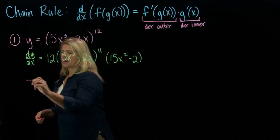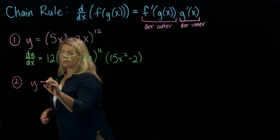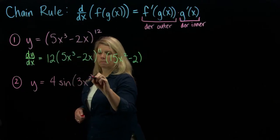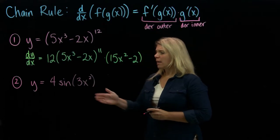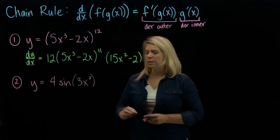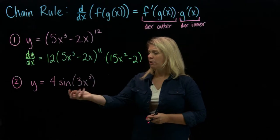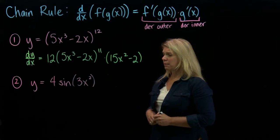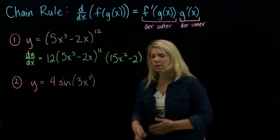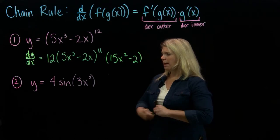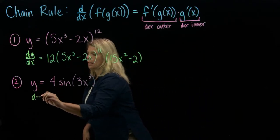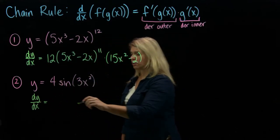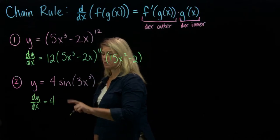We're going to look at another example that involves a trig function. Here we have a polynomial function, 3x squared, inside a trig function. We also have a constant out front, and we have a rule for differentiating when we have a constant times a function — that constant just comes along for the derivative.